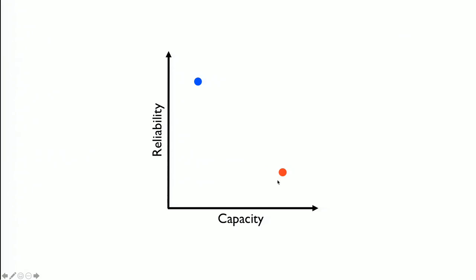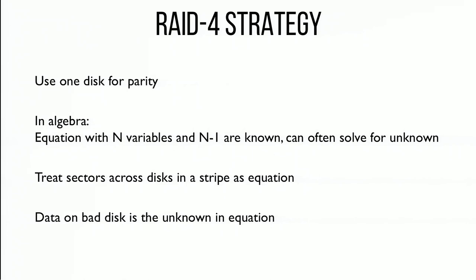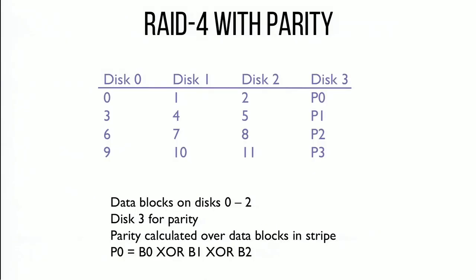We've now looked at RAID 0 — good capacity but poor reliability — and RAID 1 — poor capacity but good reliability. There must be something in between. RAID level 4 uses one disk as a parity disk. That last disk doesn't hold any useful data for the file system — it just holds a function (parity) of all the other data associated with a given stripe. It's like algebra: if you have N variables and N minus 1 unknowns you can figure out that one unknown. Each stripe is a different equation, and if we lose one disk we can recompute its data.